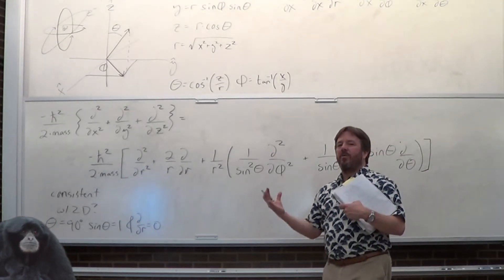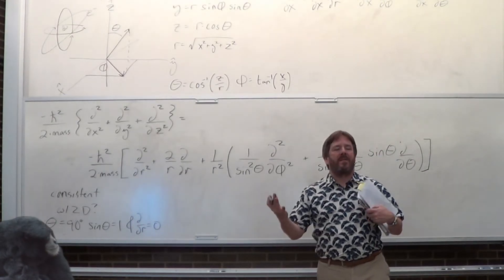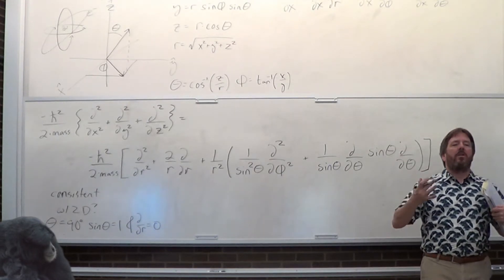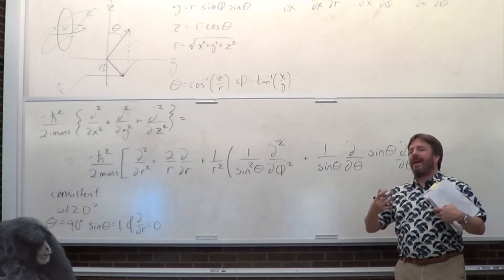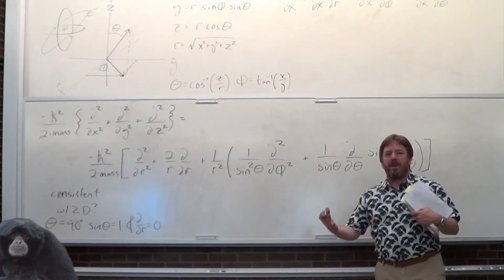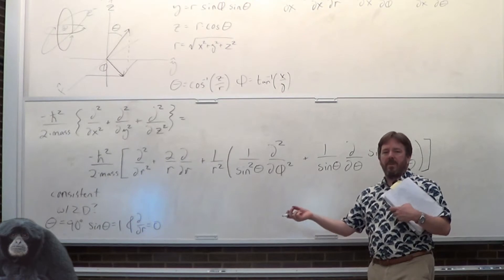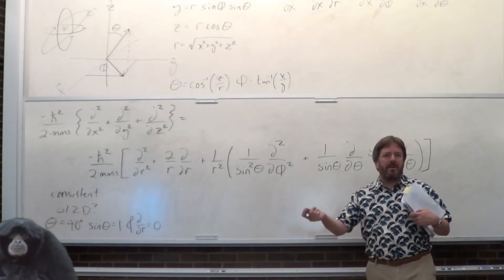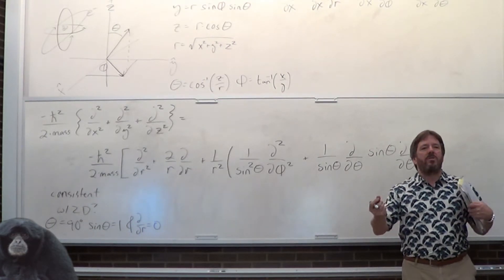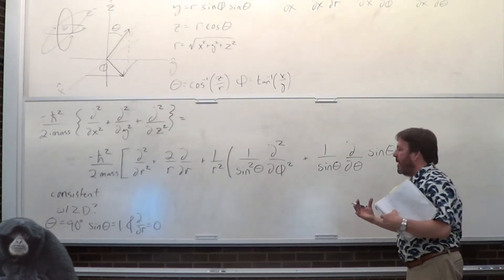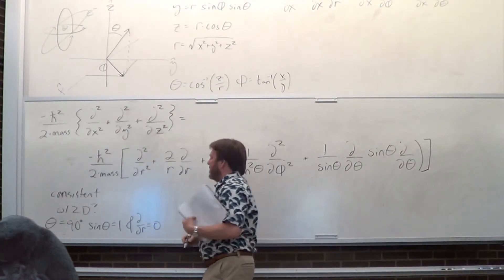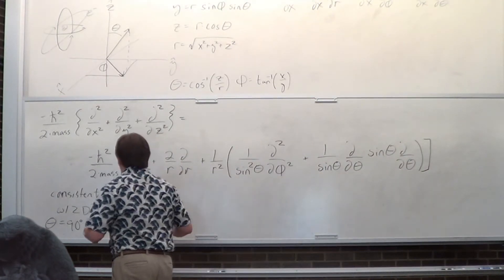If it's on a string — a rigid rotor — the particle is always at, for example, one nanometer from the center. So there's no information that the radial wave function could have, making it a constant, and all the radial derivatives are therefore zero.